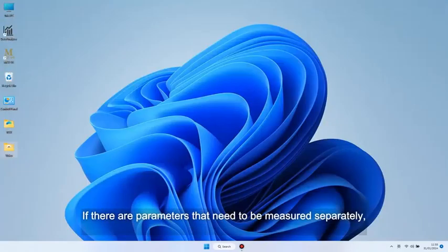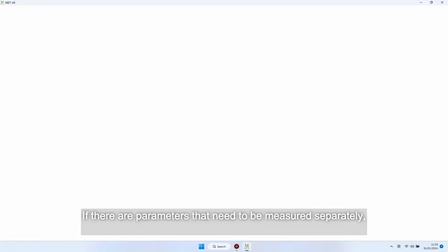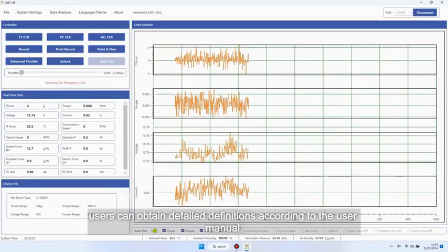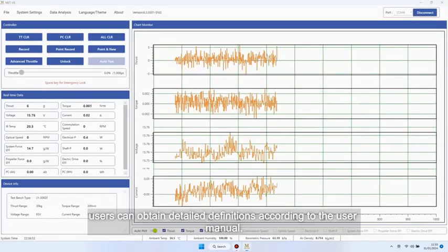Other parameters generally do not need to be set separately. If there are parameters that need to be measured separately, users can obtain detailed definitions according to the user manual.